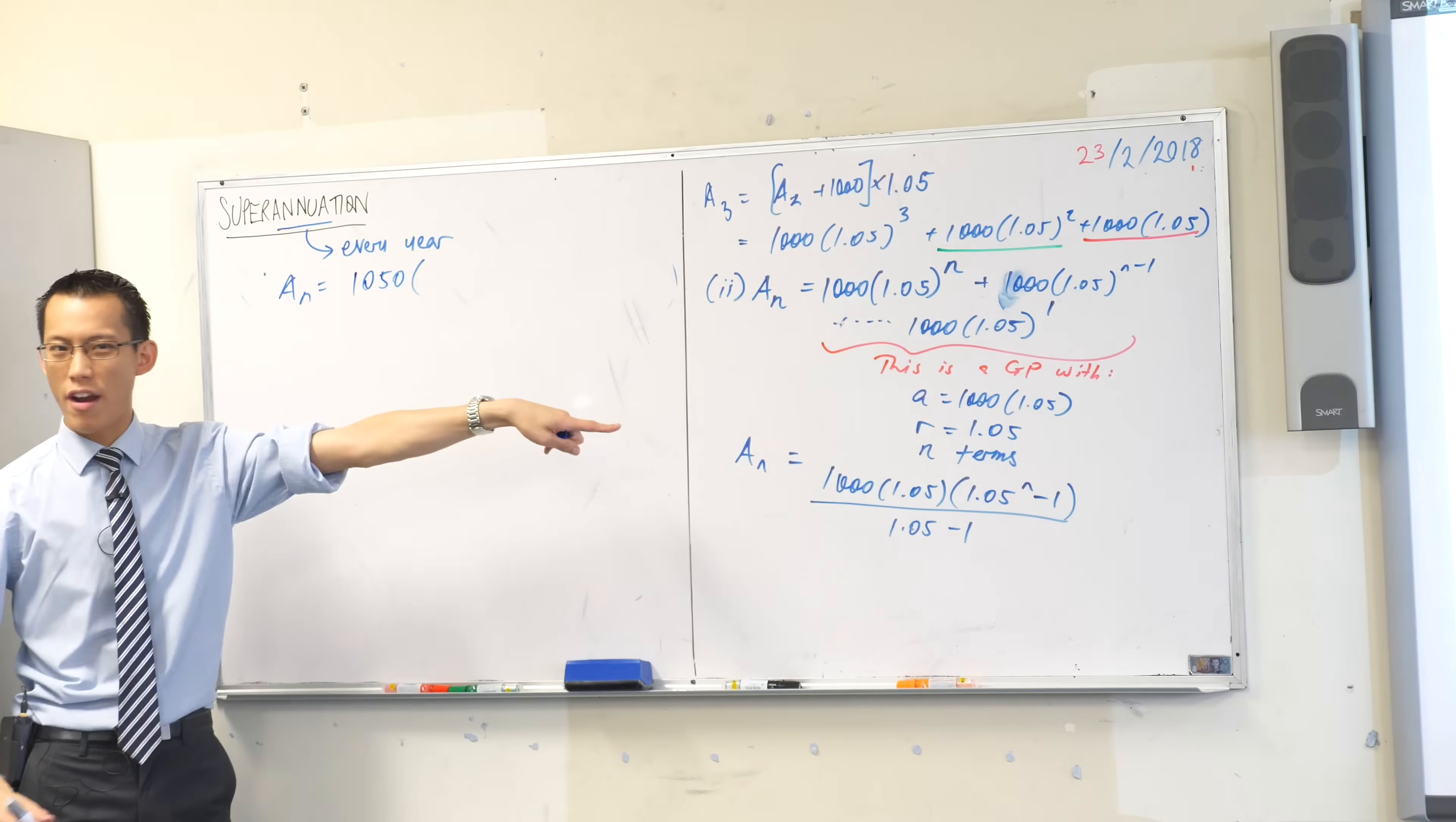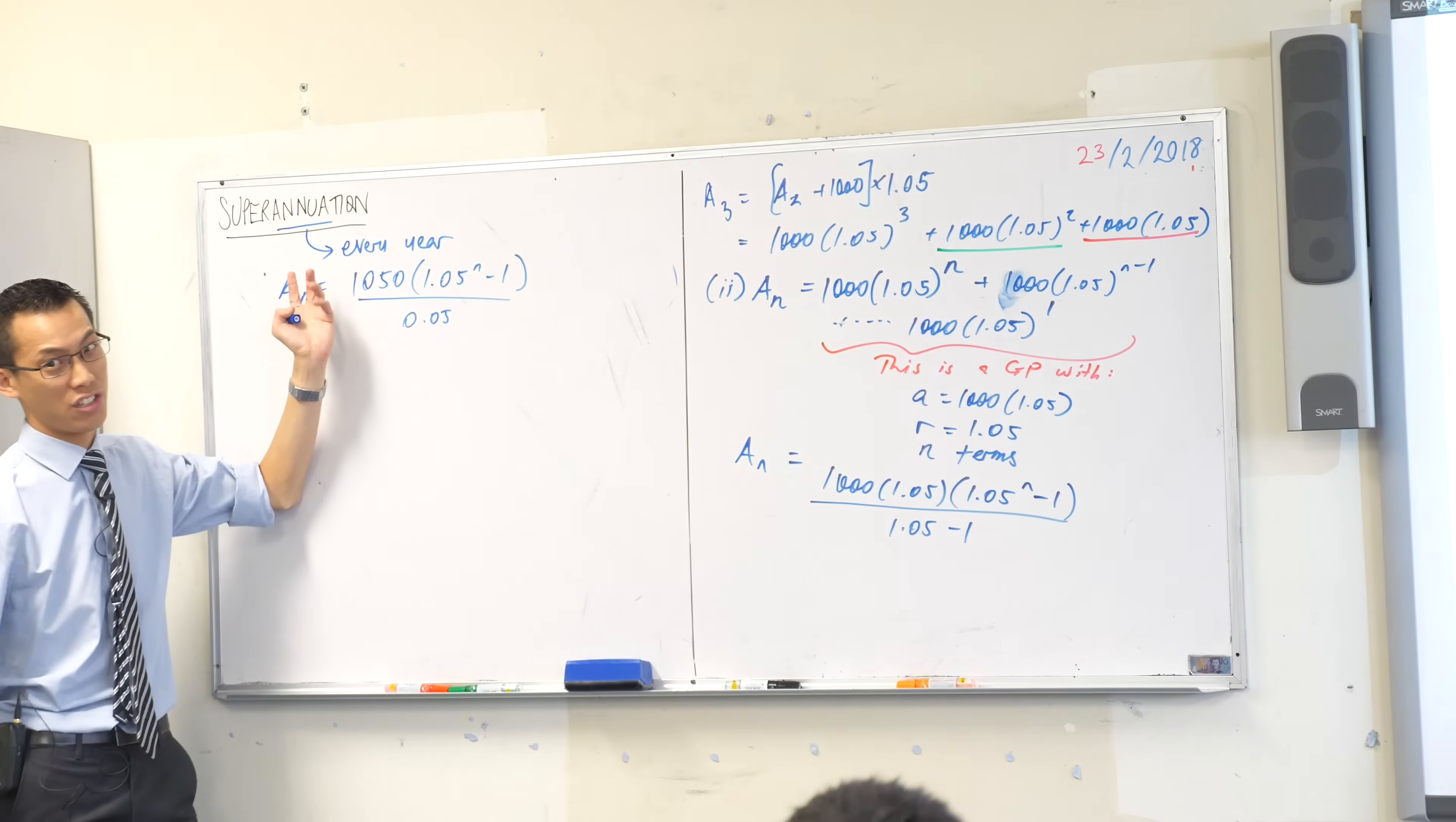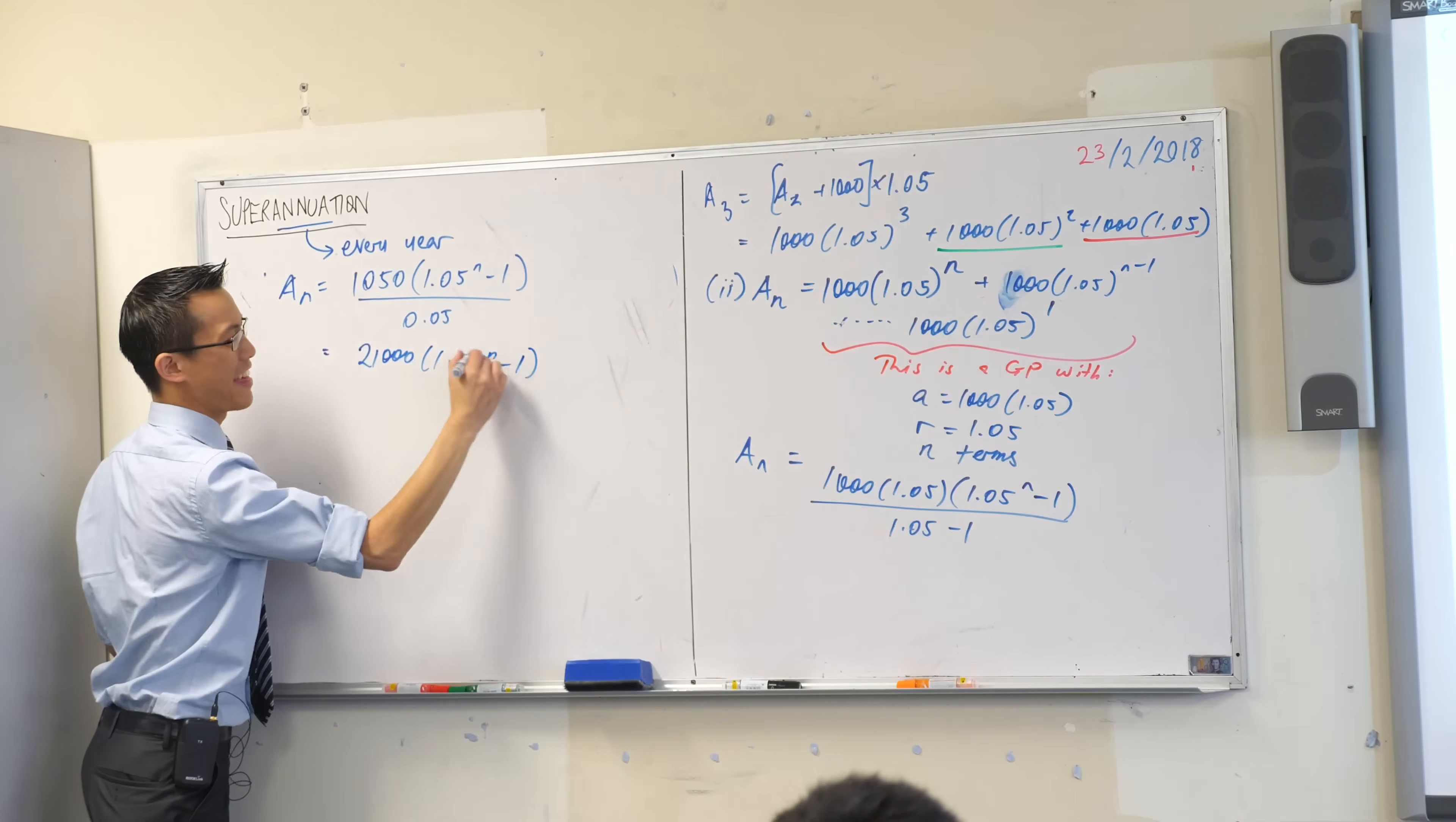This guy up in the numerator, you can't do very much with that at the moment, so I'll just leave him be. What about the denominator? 0.05. Now, that's just a number, so I actually don't know what this is. What's 1,050 divided by 0.05? Has anyone got it? 21,000? Exactly? I came up with great numbers, that's nice.